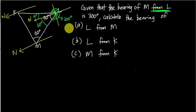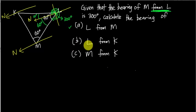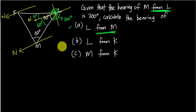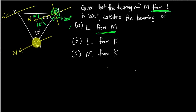So after knowing it's 60°, use 70° minus 60° to get 10°. For part A — in the real SPM, bearing only comes out in paper one which is multiple choice, so there won't be parts A, B, C — but this is from the reference book. For L from M, the angle should be at M. So I start from the north of M and rotate until I touch line ML.